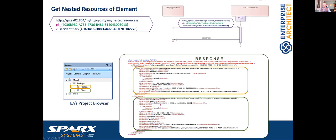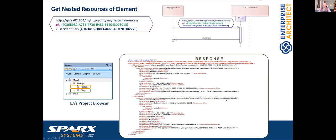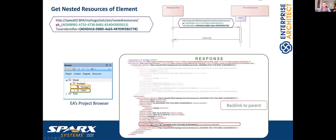The namespace is from Spark Systems. For instance, the diagram has no status property but the model element does. In Enterprise Architect we distinguish between diagrams, packages, model root packages, connectors, and elements. Here the resource type is element, and here the resource type is diagram.